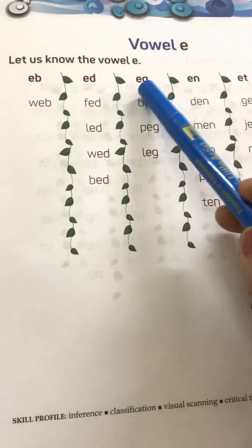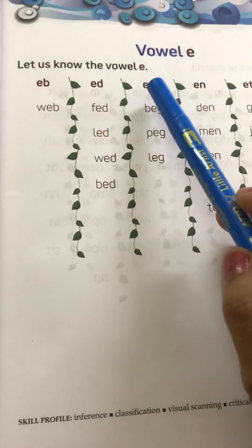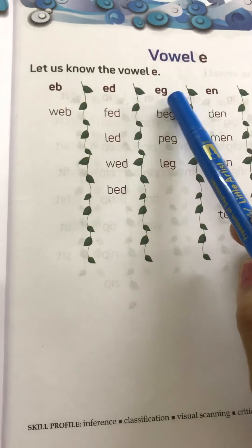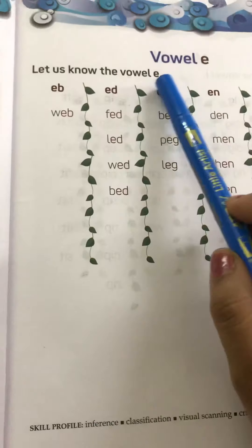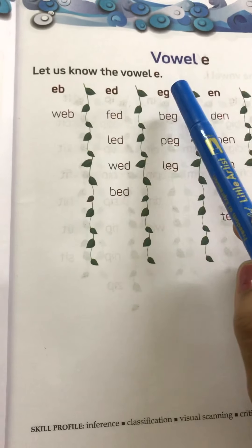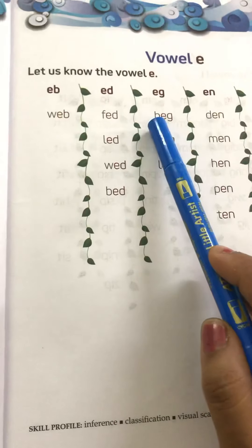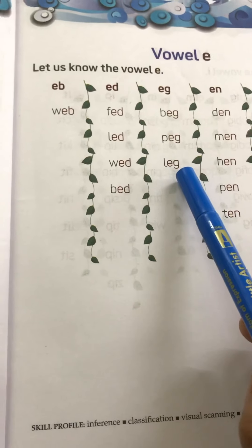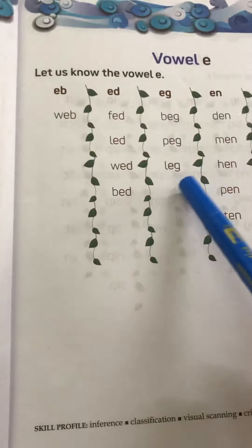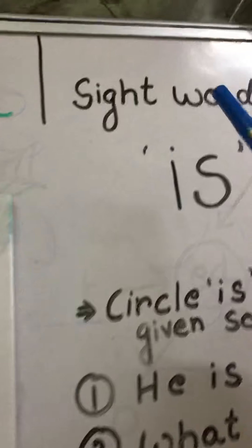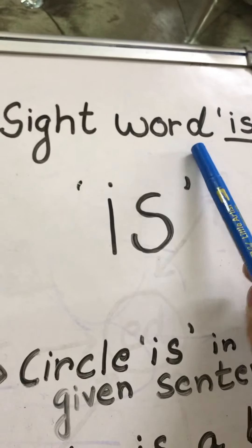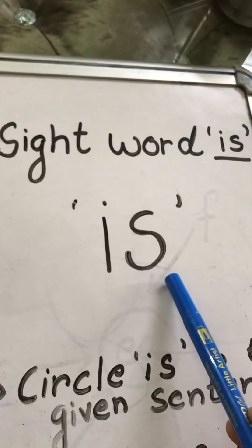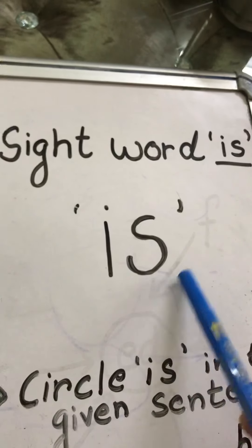So today we will do Egg words. This is E and this is G. The sound of E is E and the sound of G is G. When we combine both these letters, it will become Egg. We will also study one sight word, which is Is. I, S — Is.